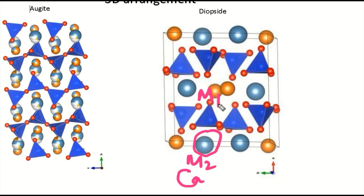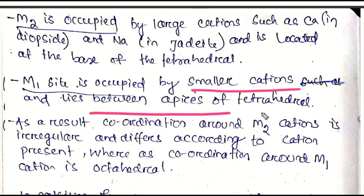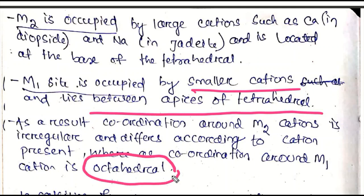M1 side is occupied by smaller cations and lies between the apices of the tetrahedra. As a result, coordination around the M2 cation is irregular and differs according to the cation present, whereas coordination around the M1 cation is octahedral — meaning six-coordinated.